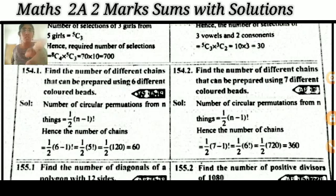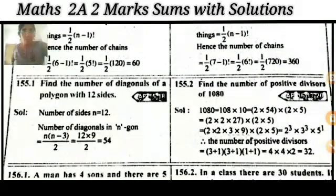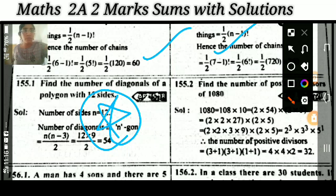Find the number of different chains that can be formed. The formula for circular permutation of chains is (n-1)!/2 — don't forget to divide by 2 in the case of chains. Same formula applies: (n-1)!/2. Number of necklaces — very very important.